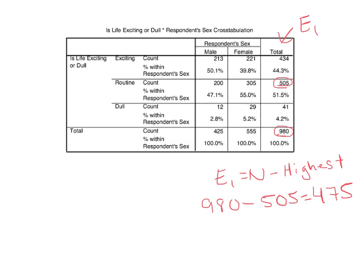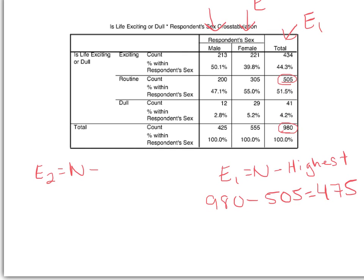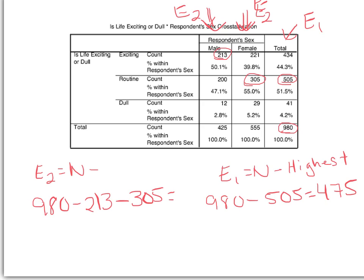To get E2, we again take N and subtract the highest frequency from each category of the independent variable. The independent variable has categories male and female. We look for the highest frequency in each column: 213 for the male column and 305 for the female column. So E2 equals 980 minus 213 minus 305, which gives us 462.